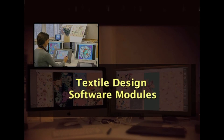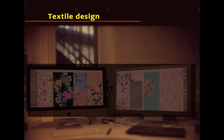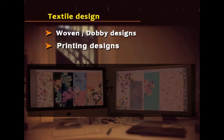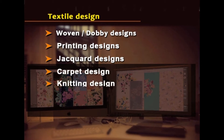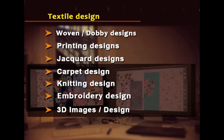Coming to the textile design software modules available in the market — exclusive software is available in the market for textile design today and it is available in the form of specific modules for each application. In case of textile design, these modules include woven or dobby designs, printing designs, jacquard designs, carpet design, knitting design, embroidery design, 3D images or design, and 3D showroom design.